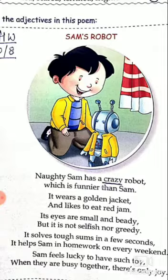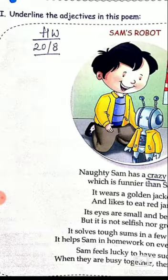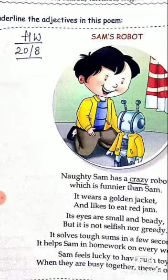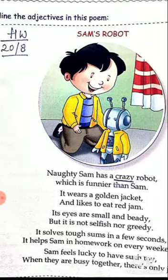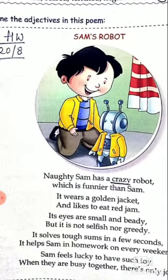Please children, I would also request you to first underline the adjectives. Like the first line I have done for you — I think I missed out naughty. Naughty is also an adjective. Crazy is also an adjective. Naughty is an adjective for Sam, crazy is an adjective for robot.